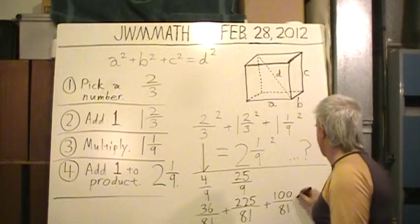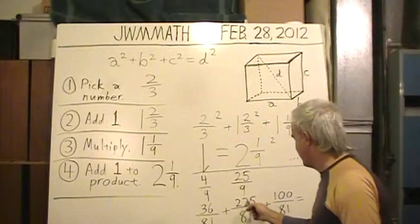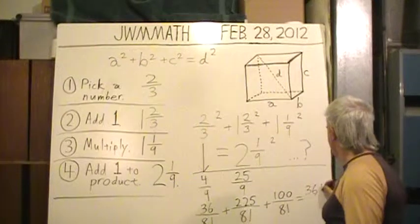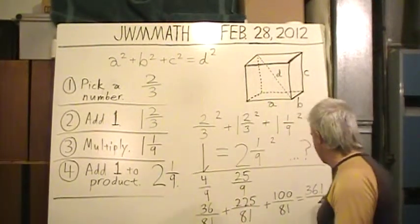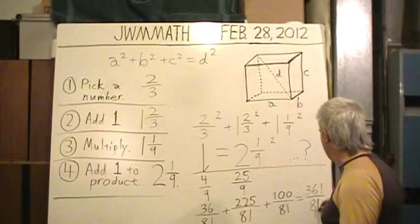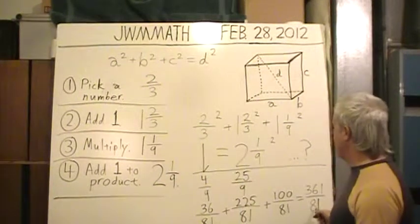I am predicting their sum is thirty-six plus two-twenty-five. That's two-sixty-one plus one-hundred is three-sixty-one. These all are the same denominator of eighty-one, just leave eighty-one as the denominator. Adding fractions with like denominators. Claiming that final sum is three-sixty-one over eighty-one.